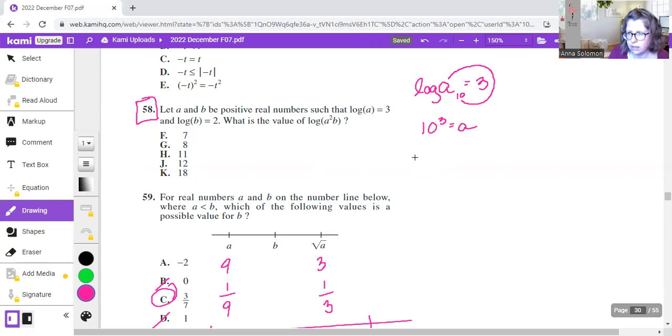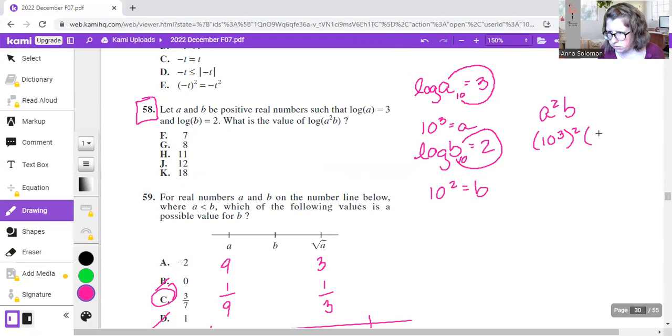And then the next one is log b equals 2. See, and I started at b because my little 10 was missing. So then we've got 10 squared equals b. Now let's get into this situation, so I've got a squared b. So that's going to be 10 cubed squared times 10 squared. When we have our exponents on either side of a parenthesis, we're going to multiply them. Numbers with the same base, we will add together the exponents. 6 plus 2 is 8. 10 to the 8.